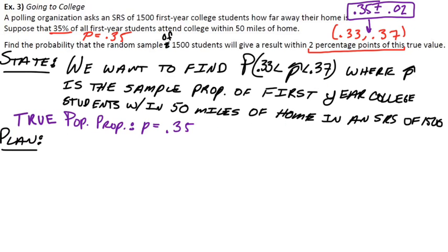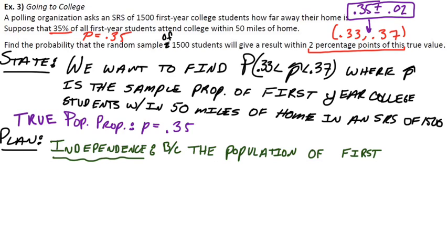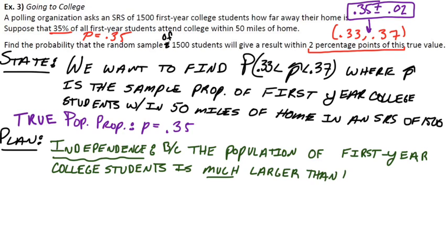So for the plan step, before we can get to our calculations and crunching numbers, we have to meet a couple conditions. And the plan step is where we do that. So the first condition, let's talk about the independence condition. And that's the one that makes sure we don't sample more than 10% of the population. So the population is actually very large. If you think about the population of first-year college students, it's a lot larger than 10 times our sample size.